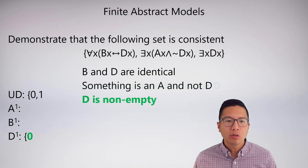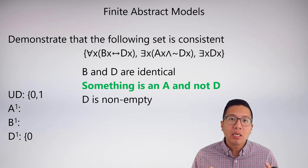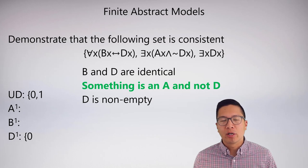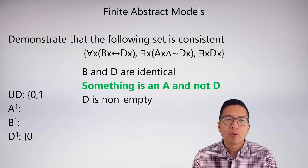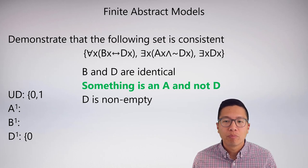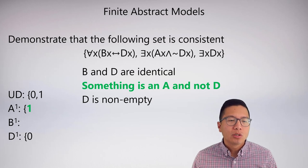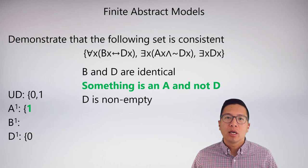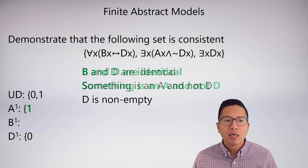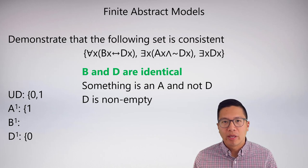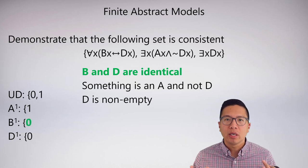Next, let's do the middle one: something is an a and not a d. I need to pick a member of the universe that is in the a predicate while not being in d. We can't pick zero because zero is already in d. So I'll naturally select one — one is now an a, but it is not a d because it doesn't appear in the extension of the d predicate. Finally, to make b and d identical, I look at d, which has zero, and also put zero into the b predicate.